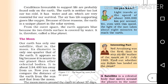Light travels at the speed of about 3 lakh kilometers per second. Yet, even with this speed, the light of the sun takes about 8 minutes to reach Earth.